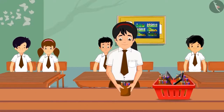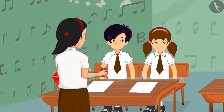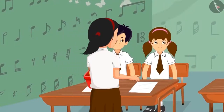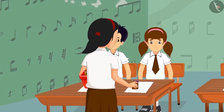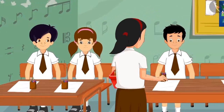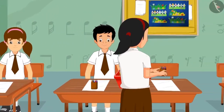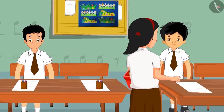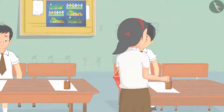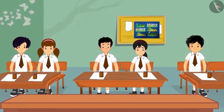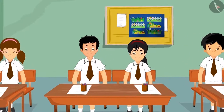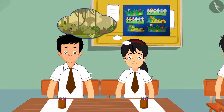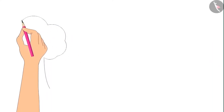At school too, Pinky helps her teacher set things. In today's art class, she distributed color boxes to everyone. Let us see what is happening in today's class. Today, all students have to make a drawing of trees, so Pinky thought of making a drawing of a jungle. At first, she drew one tree.